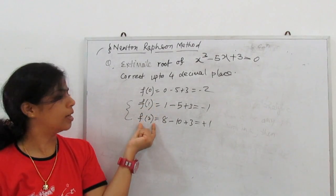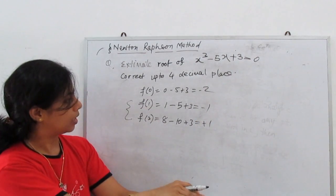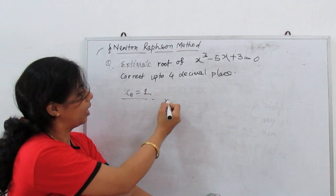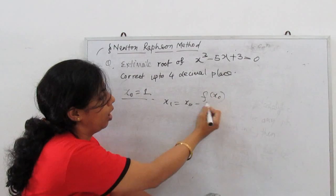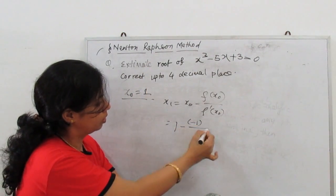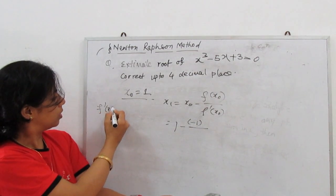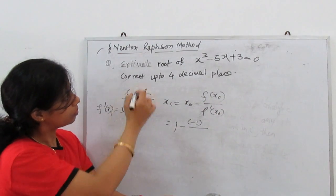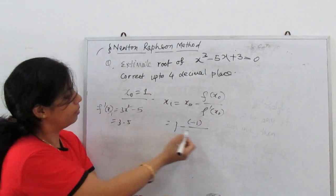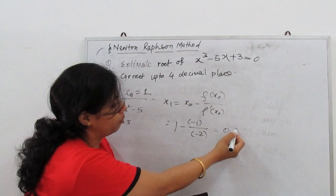One root lies between 1 and 2. So we start with x₀ = 1. Then x₁ = x₀ − f(x₀)/f′(x₀) = 1 − (−1)/f′(x₀). First we find the derivative: f′(x) = 3x² − 5. At x₀ = 1, f′(1) = 3 − 5 = −2. So x₁ = 1 − (−1)/(−2); the negatives cancel, giving x₁ = 1 − 0.5 = 0.5.